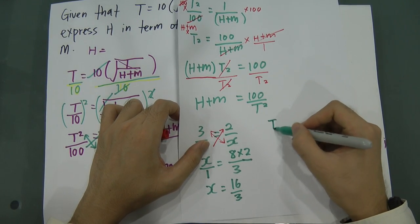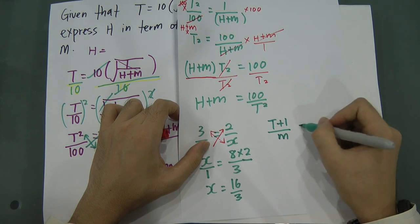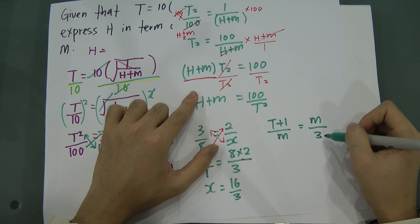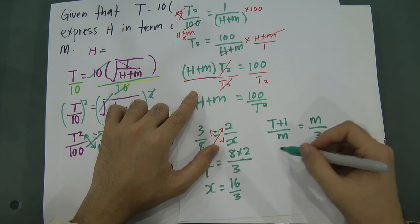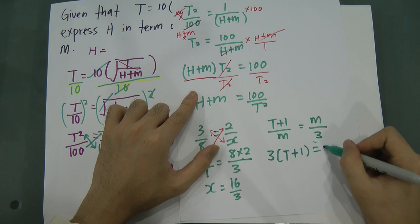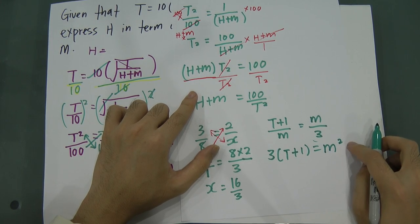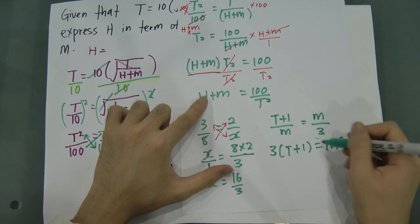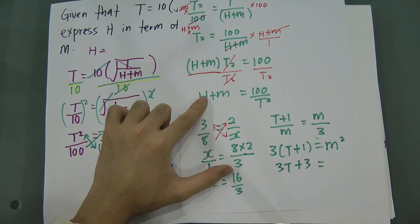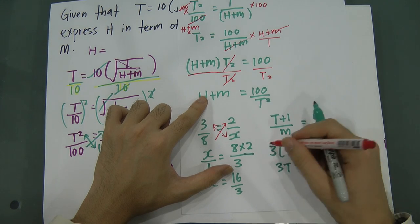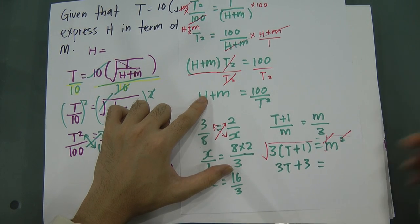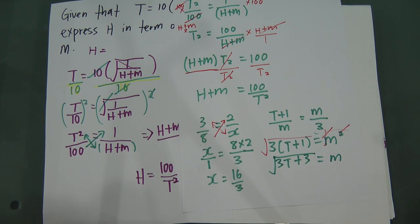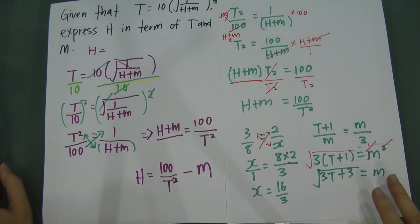One more example: (t plus 1) divided by m equals m divided by 3. Changing places — move 3 to the left and move m to the left — gives 3 times (t plus 1) equals m squared, because m moved here becomes m squared. Expanding: 3t plus 3 equals m squared. To express m in terms of t, I square root both sides — square and square root simplify — giving m equals square root of (3t plus 3).